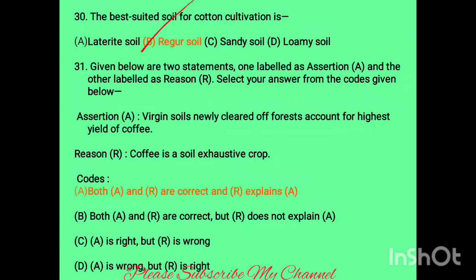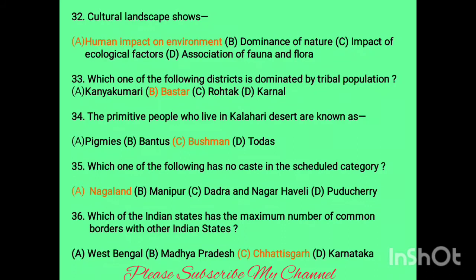The best suited soil for cotton cultivation is regur soil, or black soil — black soil is best for cotton cultivation. Next, an assertion-reason: virgin soil newly cleared of forest accounts for the highest yield of coffee — absolutely right. Coffee is a soil exhaustive crop — absolutely correct. Both statements explain each other. Question thirty-two: cultural landscape shows human impact on the environment — option A is correct.